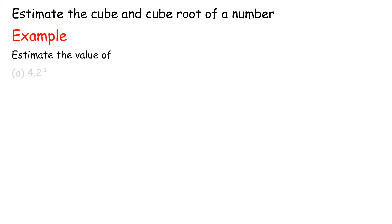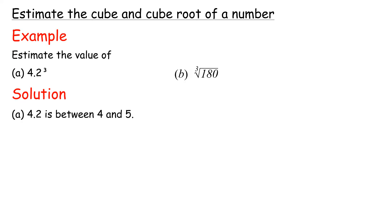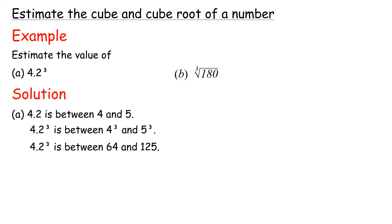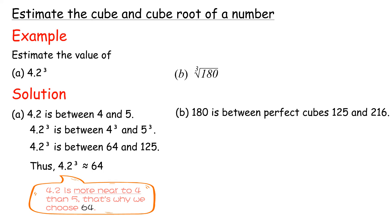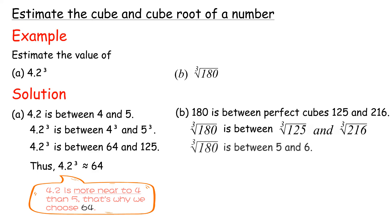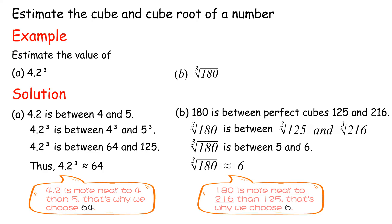Estimate the cube and cube root of a number. If we do not have a calculator and want to roughly know the value, we estimate. Example: Estimate the value of A: 4.2 cubed, B: Cube root of 180. Solution A: 4.2 is between 4 and 5. So 4.2 cubed is between 4 cubed and 5 cubed, which is between 64 and 125. Thus, 4.2 cubed is approximately 64. B: 180 is between perfect cubes 125 and 216. Cube root of 180 is between 5 and 6. Cube root of 180 is approximately 6.